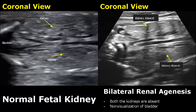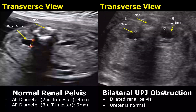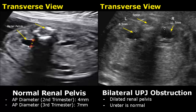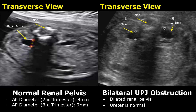The normal diameter of the renal pelvis is 4 mm in the second trimester and 7 mm in the third trimester. UPJ stands for ureteropelvic junction, and UPJ obstruction leads to dilatation of the renal pelvis. Here we have bilateral UPJ obstruction involving both kidneys, and the ureter will be normal — it will not be dilated.